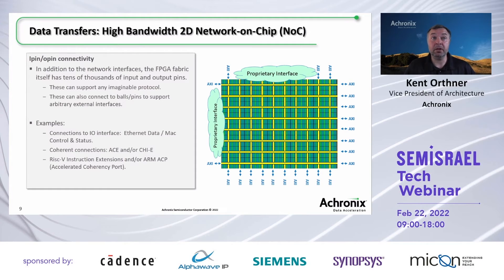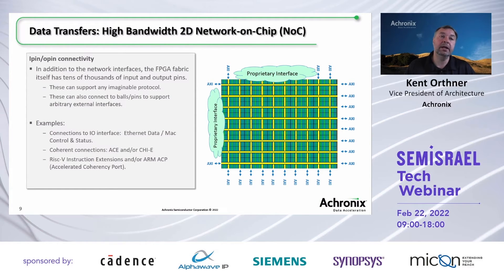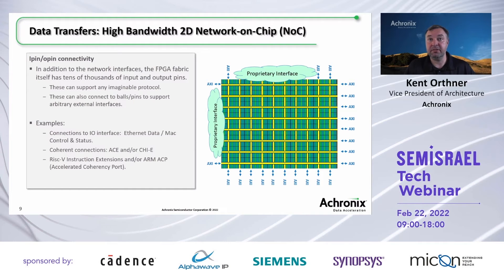This can support basically any imaginable protocol. For example, you might interface with Ethernet data, match your Ethernet MAC control and status, support cache coherency with ACE or CHI. Or you might connect the FPGA fabric boundary to a RISC-V instruction extension port, letting you add instructions to the RISC-V instruction set where the implementation is done in the FPGA fabric — meaning you can ship your device and later add an instruction implemented inside the FPGA. For ARM processors, you can use their Accelerated Coherency Port, attaching the FPGA between processor cores and the local L1 cache to accelerate local transactions very quickly.